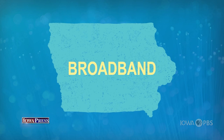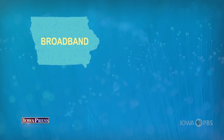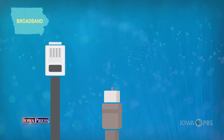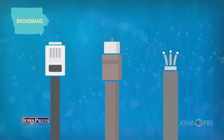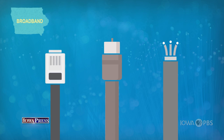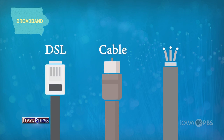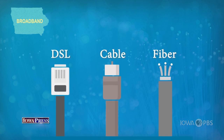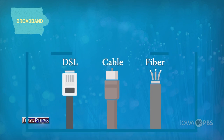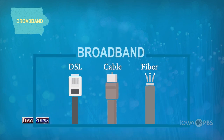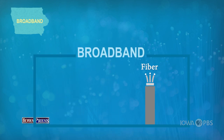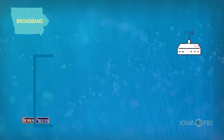Broadband Internet is a catch-all term for three types of high-speed Internet access technologies: DSL, cable, and fiber-optic cable. While broadband covers them all, they are vastly different in speed, materials, and most importantly, availability.